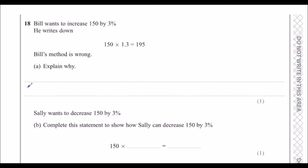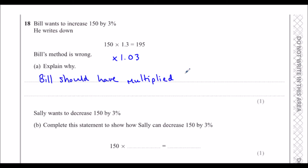Question 18: Bill wants to increase 150 by 3%. He writes 150 times 1.3 equals 195 — Bill's method is wrong. He multiplied by 1.3, which adds on 30%. He should have multiplied by 1.03 to add on 3%.